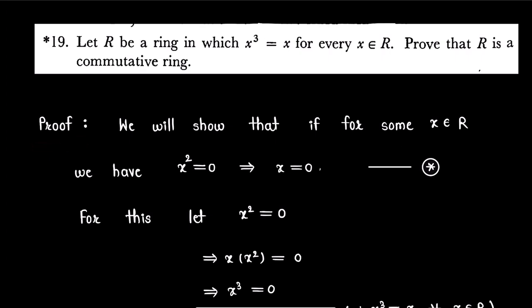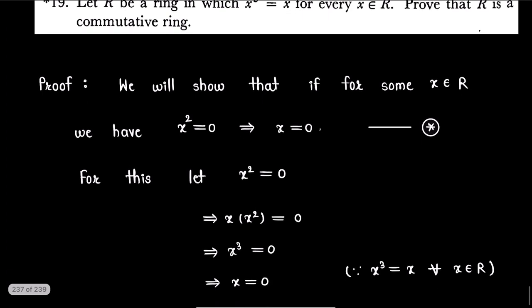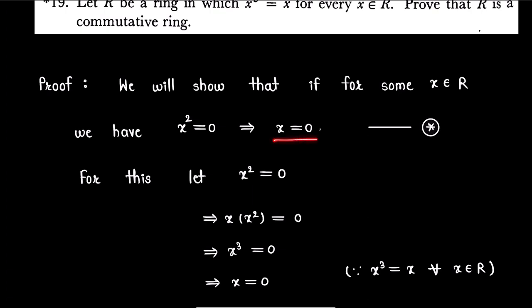So, proof. Firstly, we will show that if for some element x in ring R we have x squared is equal to 0, then we get x is equal to 0. For this, let us consider x squared is equal to 0. This implies x dot x squared is equal to 0, which implies x cubed is equal to 0. Now in our ring R we have x cubed is equal to x, so we get x is equal to 0. We will call this result star, and we will use it in our remaining proof.